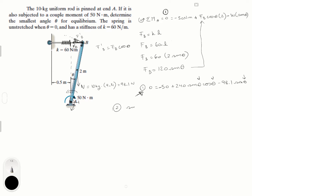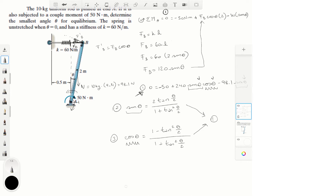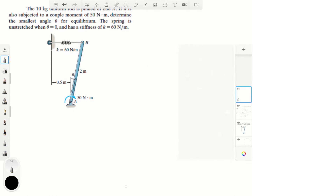From trigonometry, sine theta equals 2 tan(θ/2) over 1 plus tan²(θ/2), and cosine theta equals 1 minus tan²(θ/2) all over 1 plus tan²(θ/2). These are equations 2 and 3. I'm going to plug them into equation one — replacing sine theta and cosine theta — and make a new page to stay organized.